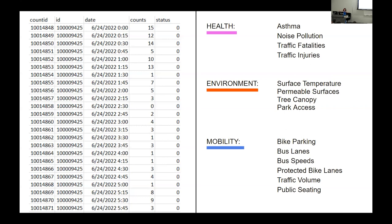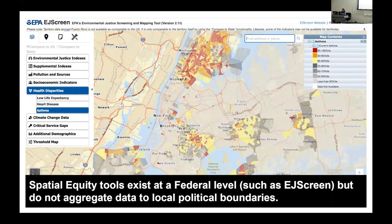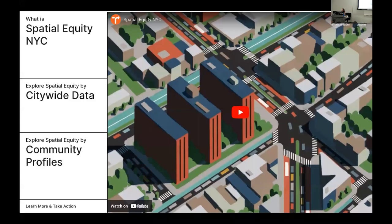From my survey of equity tools that have been developed, hyper-specific tools allow the targeted audience to make better policy decisions. Spatial equity tools exist at the federal level, such as EPA's EJ Screen, but they do not aggregate data at local political boundaries — they look at things at the census tract level. Our solution was to convert information into uniform boundaries that are quick and accessible, create one tool that includes multiple equity metrics, and improve utility by reporting data at the city council district scale.